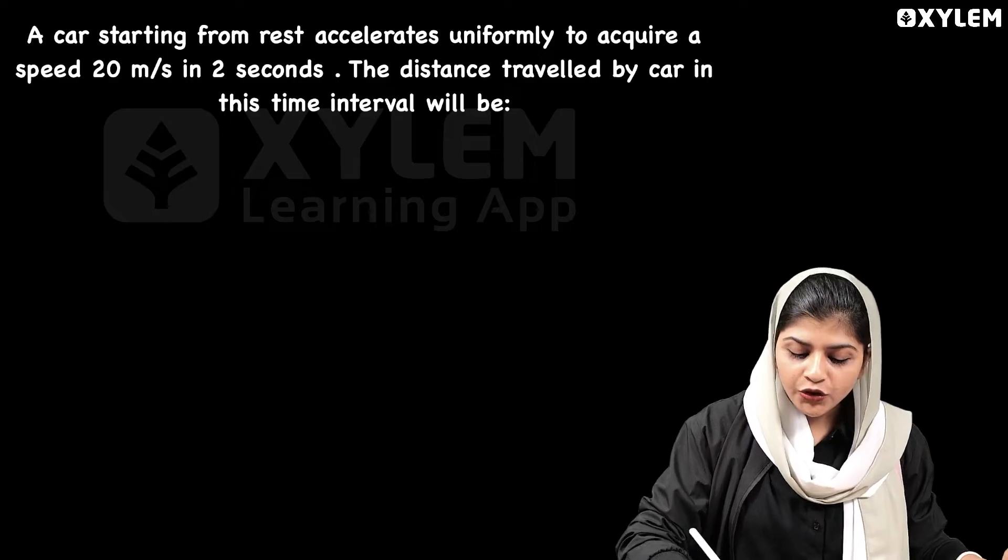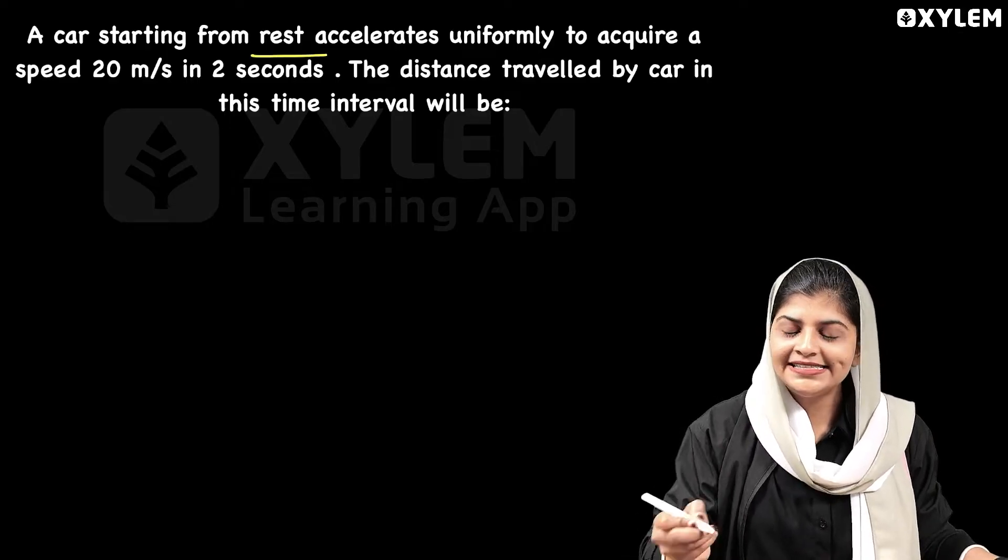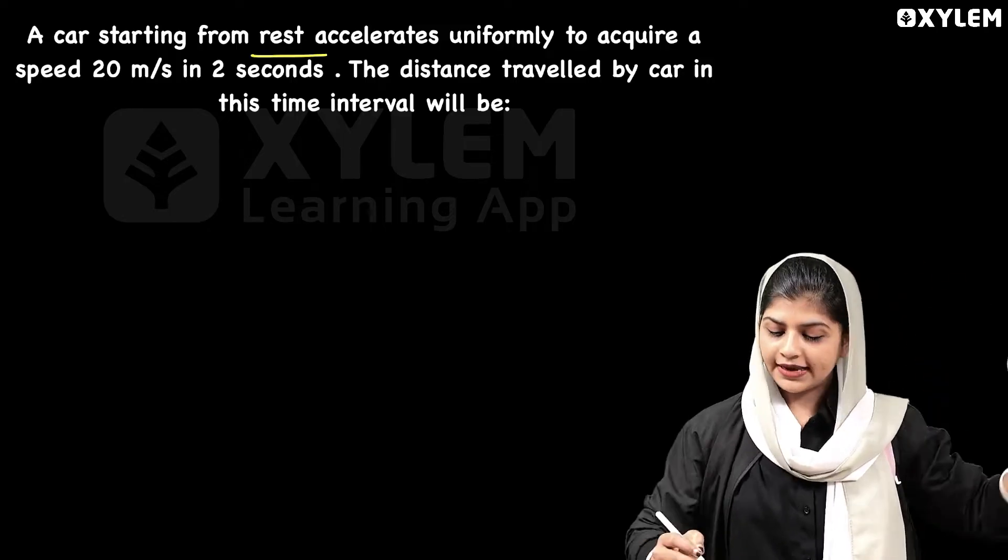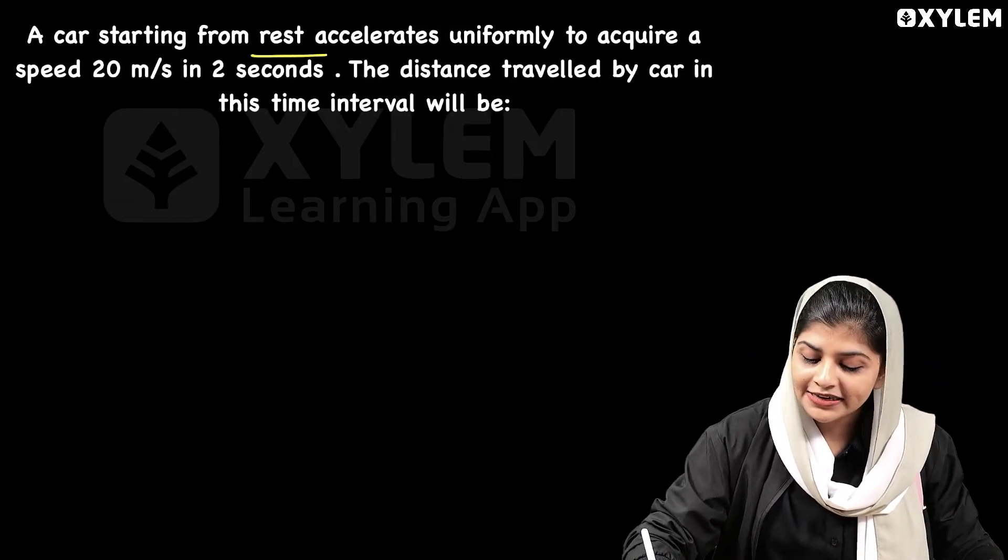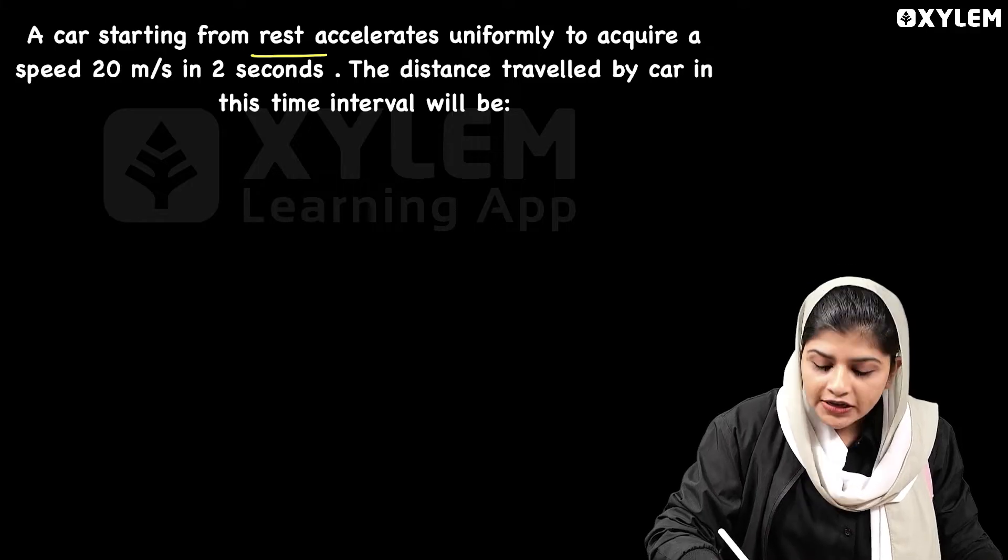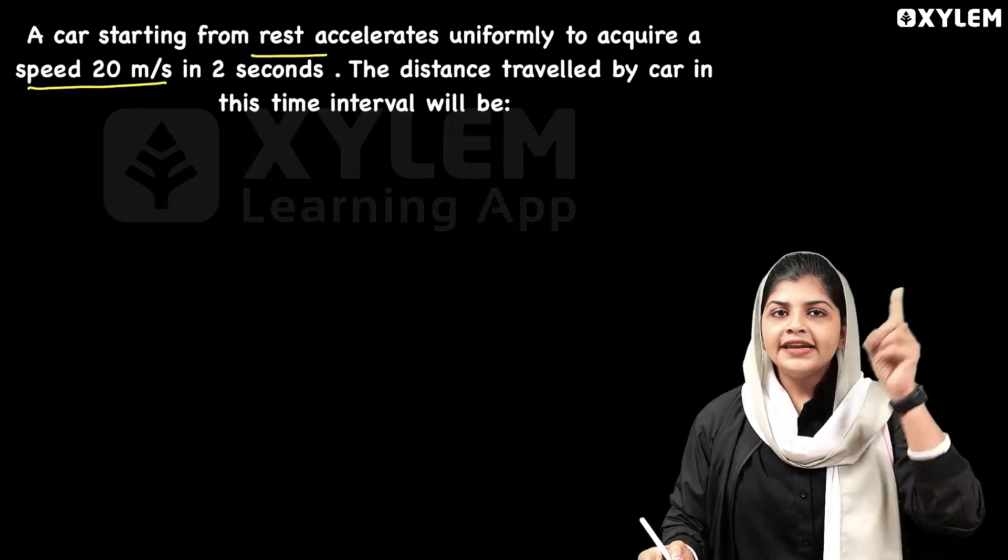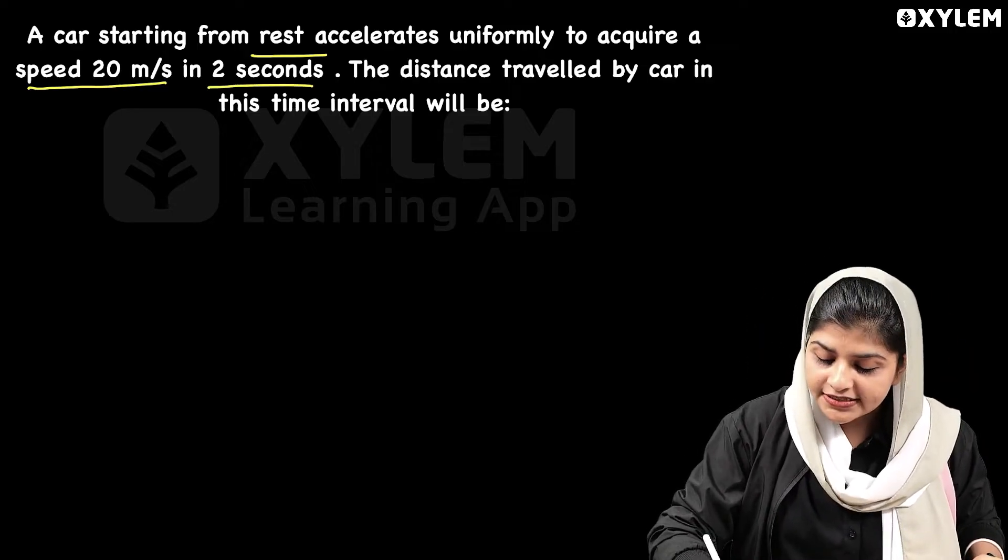How are we looking for? A car starting from rest - so initial velocity u is zero. Accelerates uniformly to acquire a speed of 20 meter per second - speed is 20 meter per second. In 2 seconds - so time is 2 seconds.